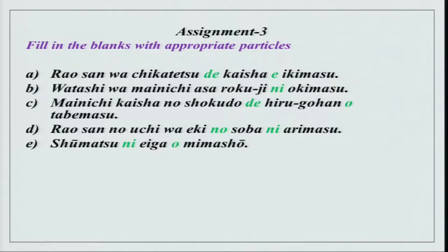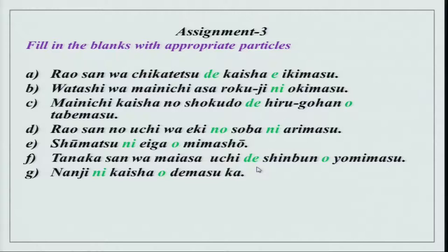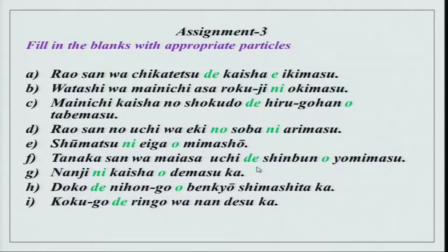Shumatsu ni eiga wo mimashou — shumatsu again for time. Tanaka san wa mai asa uchi de shinbun wo yomimasu — place de activity wo shimasu. Nanji ni kaisha wo demasu ka — nanji ni for time. Doko de nihongo wo benkyou shimashita ka — where, for place, activity. Kokugou de ringo wa nan desu ka — kokugo is your national language. This is what you were supposed to do. I hope all of you got it right.